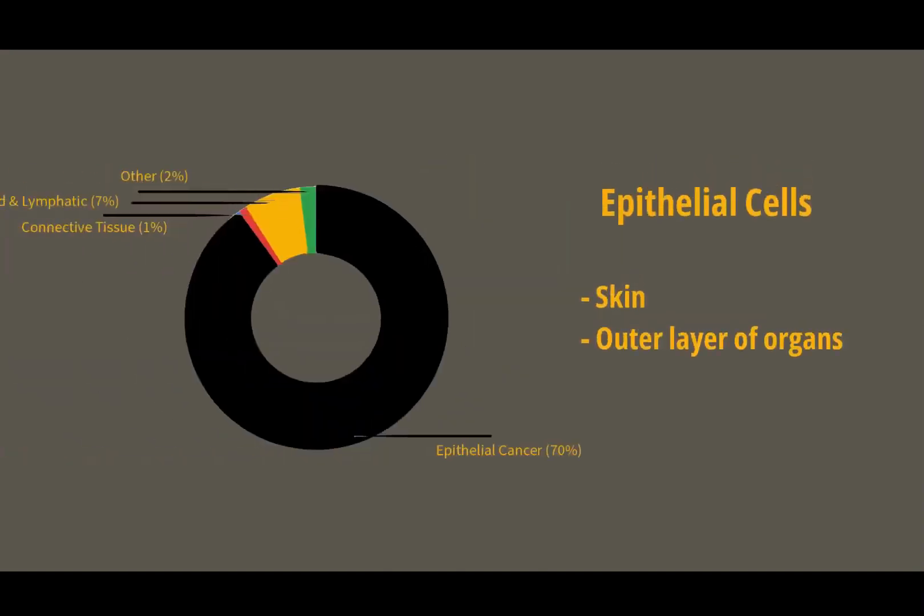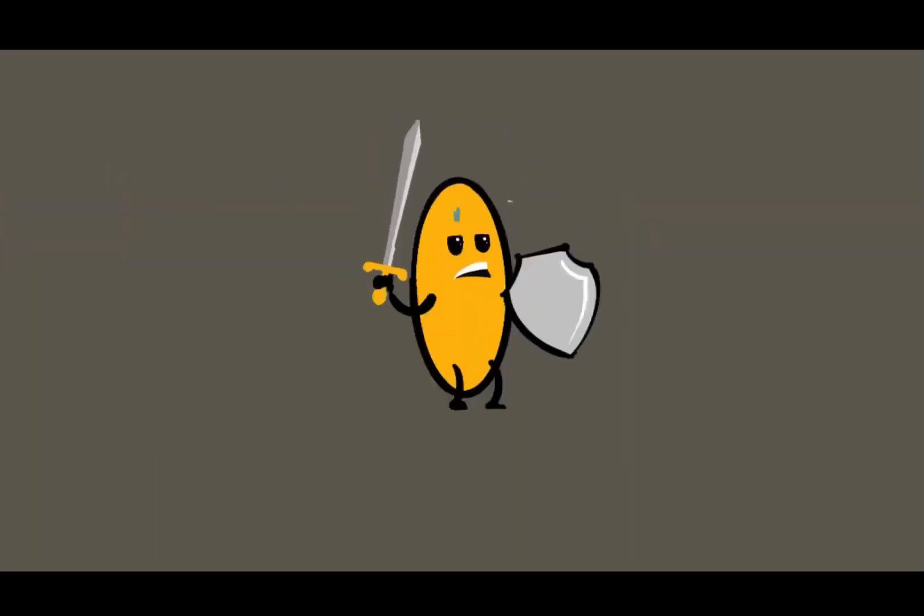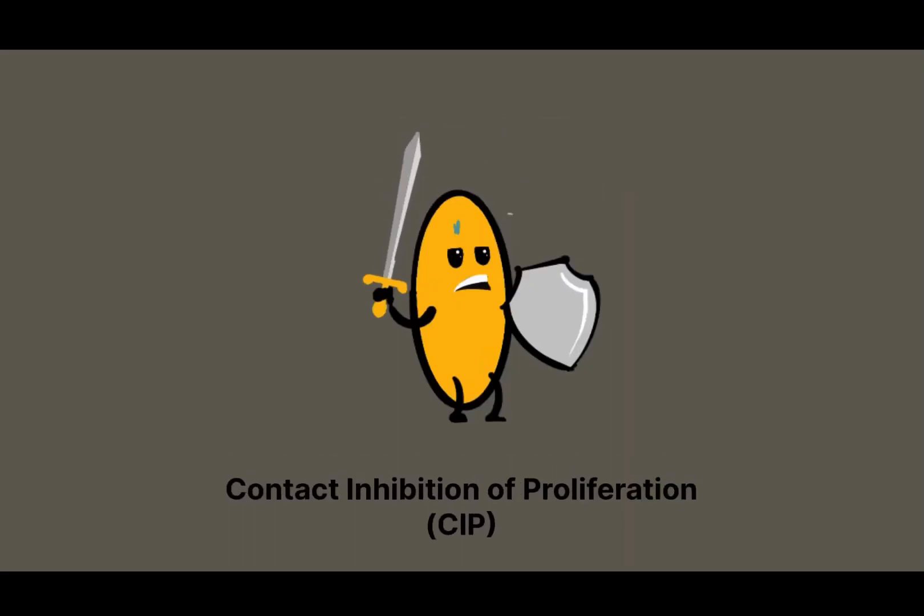Epithelial cell cancer is the most commonly occurring type of cancer. In epithelial cells, contact inhibition of proliferation, also called CIP, is one of the defense mechanisms.